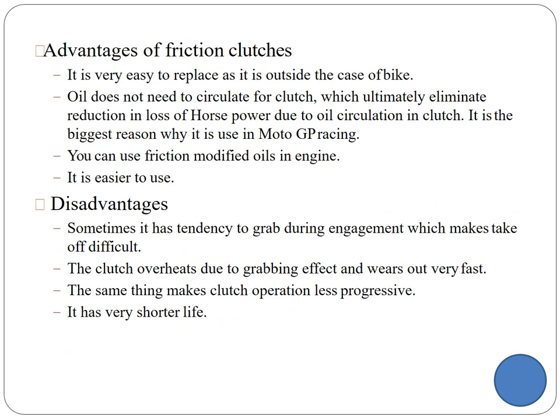Advantages of the clutch: you can replace the clutch because it is placed outside the engine casing — outside the casing of the bike. Oil does not need to circulate for the clutch, which eliminates horsepower losses from oil circulation. This is the biggest advantage, which is why this clutch is used in MotoGP car racing. You can also use friction-modified oil in engines. Disadvantage: there is a tendency to grab during engagement, the clutch can overheat and wear fast, reducing its life, and smooth operation may not be possible.